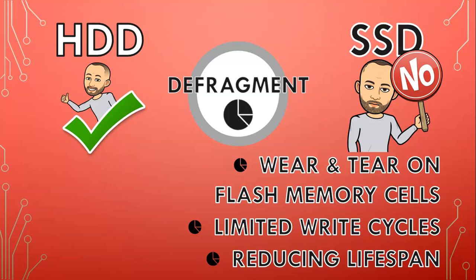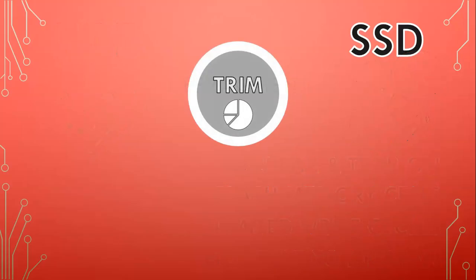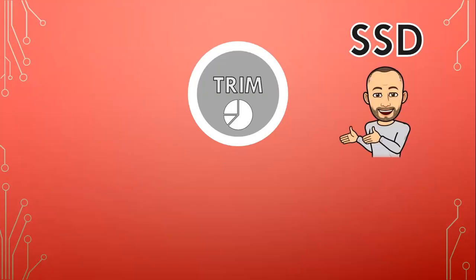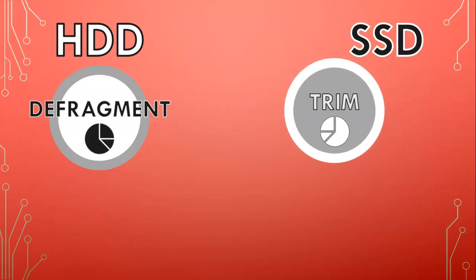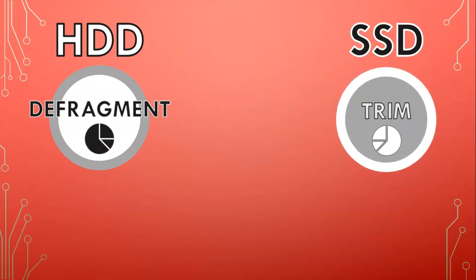Instead of defragmentation, SSDs benefit from a different optimization technique called TRIM. The TRIM command allows the operating system to inform the SSD which data blocks are no longer in use, enabling the SSD to proactively erase and consolidate these blocks. So when it comes to a hard drive, by all means defrag when you need to — but rather not if you have a solid state drive.